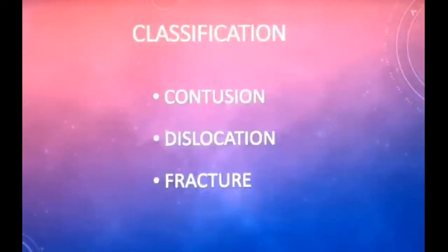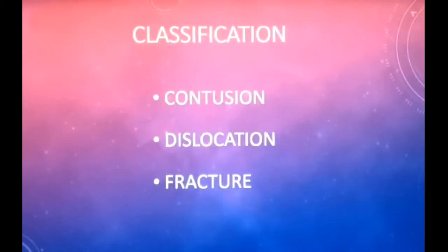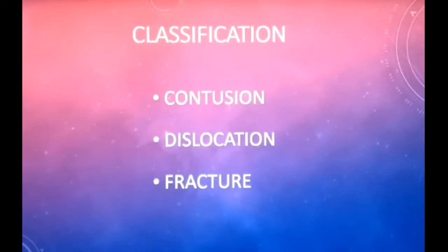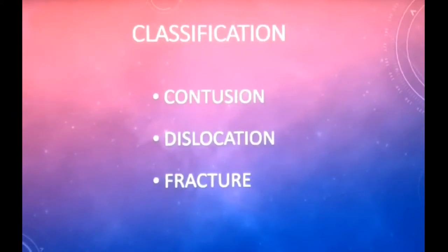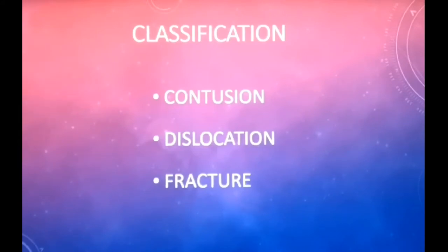Moving on to classification of condylar injuries. There are basically three types of injuries seen in the temporomandibular joint: contusion, dislocation, and fracture. Contusion involves soft tissue injuries to ligaments, muscles, and synovium and may cause formation of inflammatory exudate or haemarthrosis. A tear in the meniscus can also result in osteoarthritic changes.